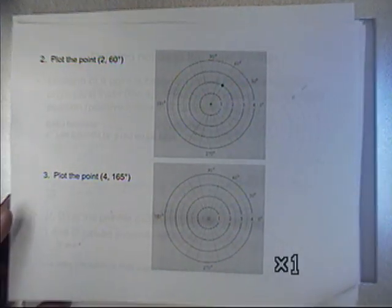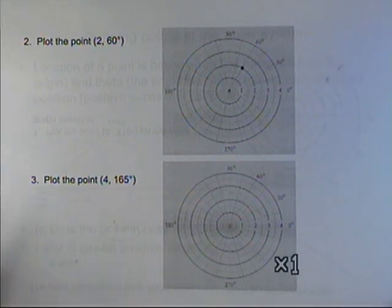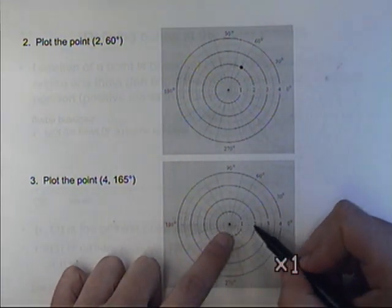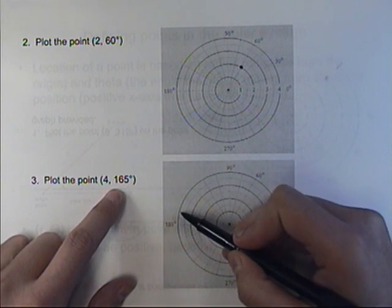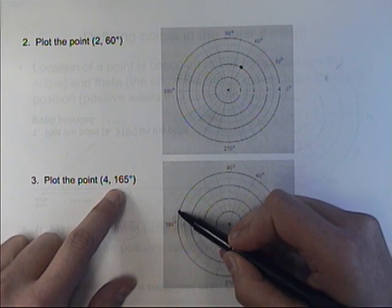If I wanted one that was 4 units away from the origin, I'd go over 1, 2, 3, 4, and rotate 165 degrees. 165 degrees isn't quite 180. It would be about right there.